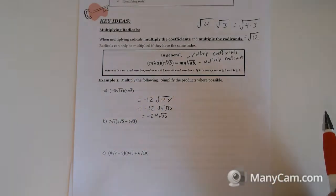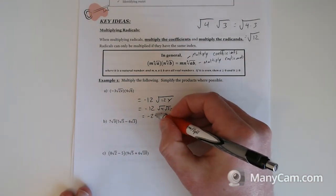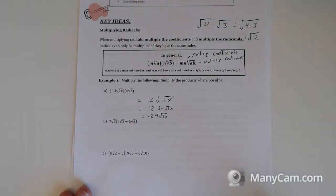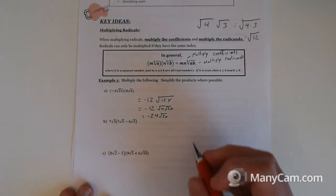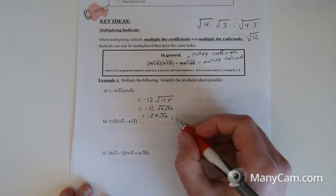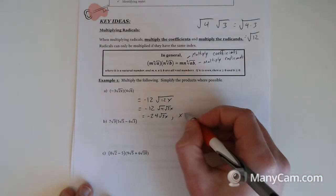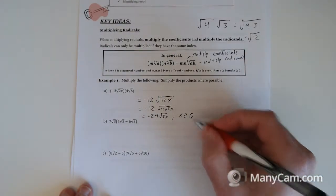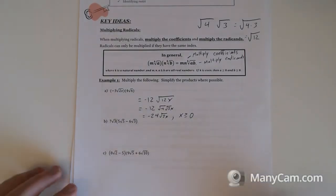One thing — if you're in the 20-1 course, remember to state restrictions every single time in this unit. Every time it's an even-indexed root, the radicand has to be positive. So 3x has to be positive, meaning x has to be greater than or equal to 0. That's our restriction: x is not allowed to be a negative number.